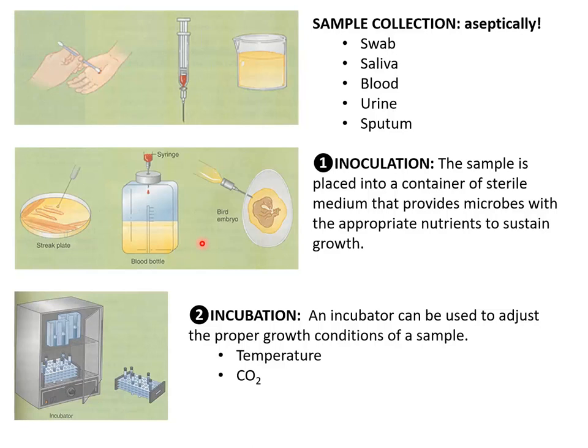Once we have inoculated our growth medium, the next step is going to be incubation. Usually this is just going to be done in an incubator. We can set different temperatures in these incubators, and we could also set a percentage of carbon dioxide. What we want is the proper growth conditions and environment for the sample that we're trying to cultivate.